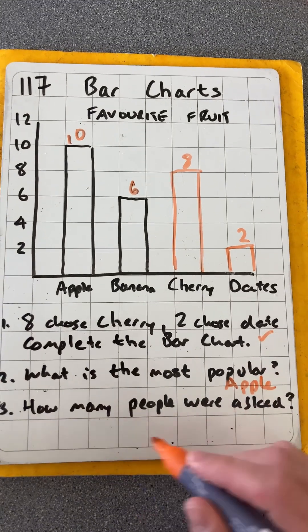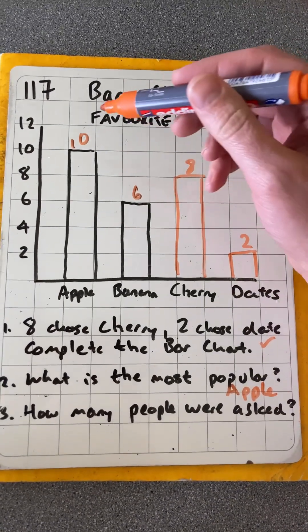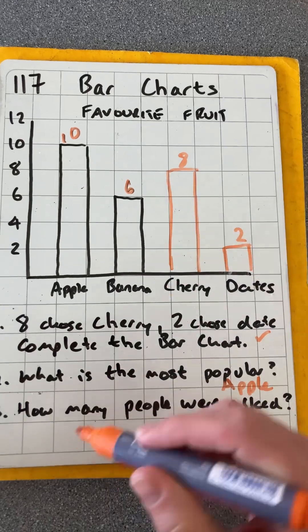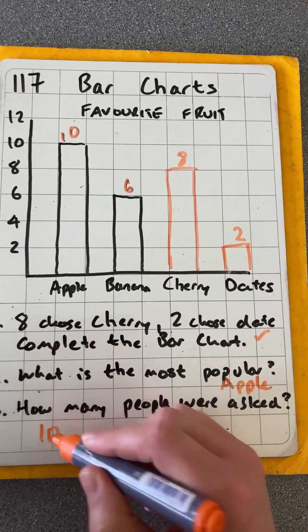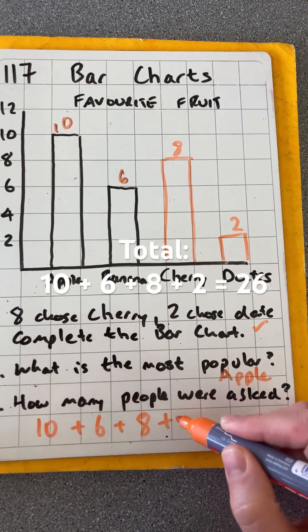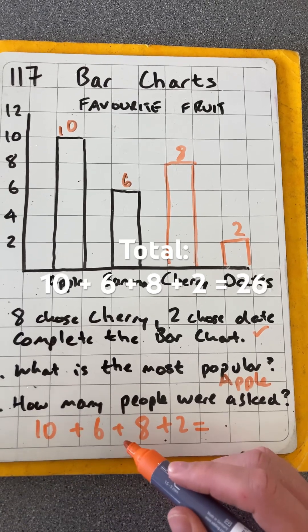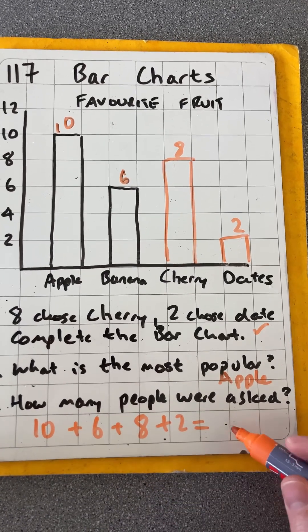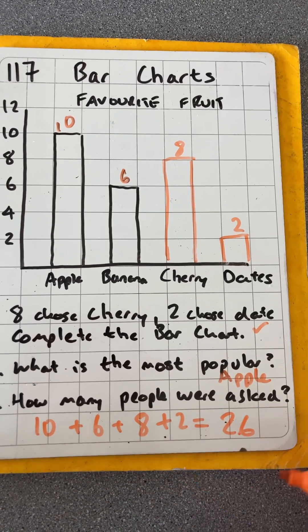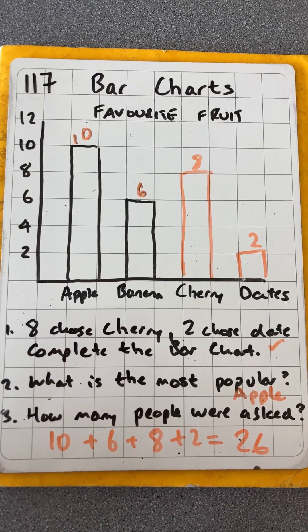Then it says how many people were asked or surveyed — we add those four numbers together. So 10 plus 6 plus 8 plus 2 will be 16 plus 10, which equals 26. That's Martin Maths bar charts. Thanks.